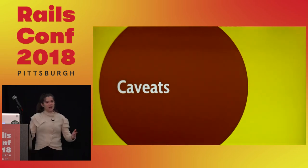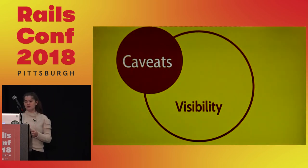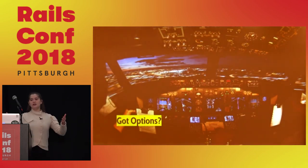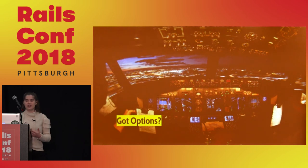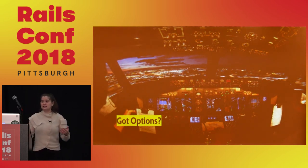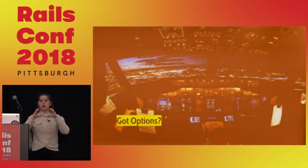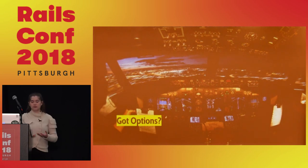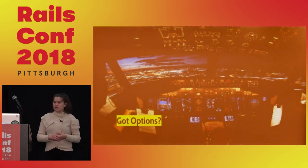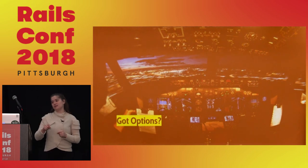Now, some buyer beware caveats. First: visibility. We've built a lot of knobs and switches, but you haven't seen a dashboard — that's because you'll need to build one. Whether it has pretty graphics or just command-line output, having something that pulls together all the places where you store state for your buttons and switches into one comprehensible place is really important for incident operations.